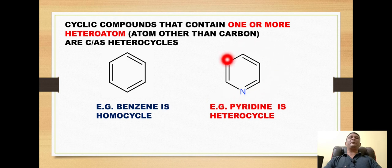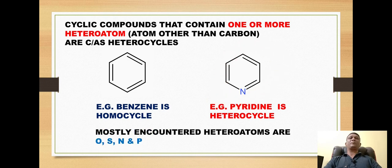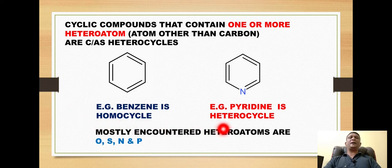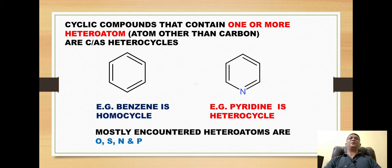So benzene is considered a homocycle, while pyridine represents a heterocycle. In heterocyclic compounds, the most commonly encountered heteroatoms are oxygen, sulfur, nitrogen, and phosphorus.